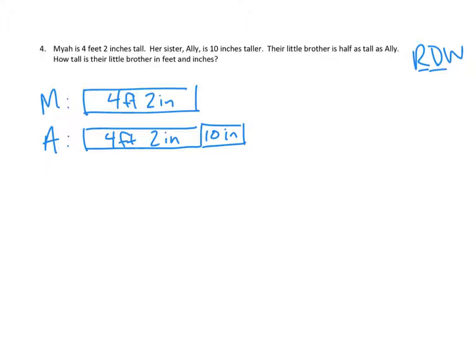And now the brother, the brother doesn't get a name, does he? We'll just call him B for brother. The little brother is half as tall as Allie. So if we looked at Allie's height, and we said, well, there's about half. It's one half of Allie.